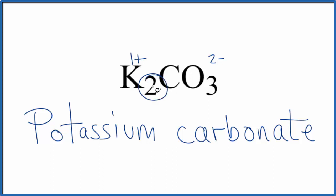So we need two of these. 2 times 1 plus gives us 2 plus, and that balances out the 2 minus. So we need two potassiums with this carbonate ion here for our potassium carbonate, K2CO3.